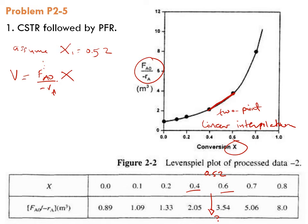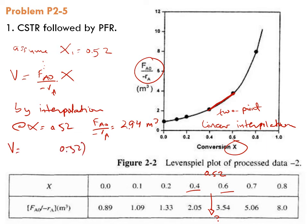By interpolation at X equals 0.52, F_A0 over minus r_A equals around 2.94. I'm not showing you the procedure. Now you calculate V again. You have 0.52 times 2.94. Of course, it's not satisfactory, so you're going to assume a larger X because you will have larger volume closer to 1.6, and so on.